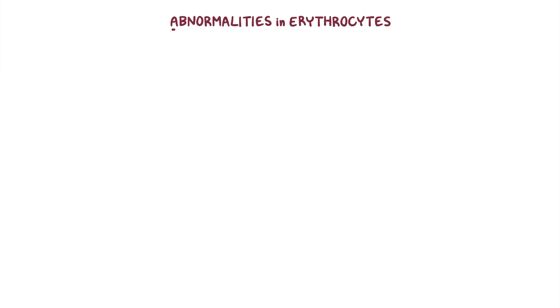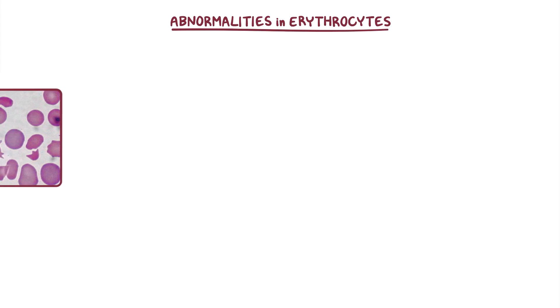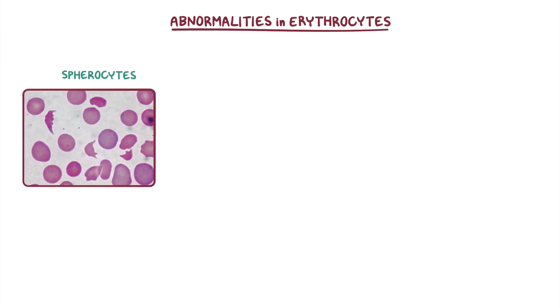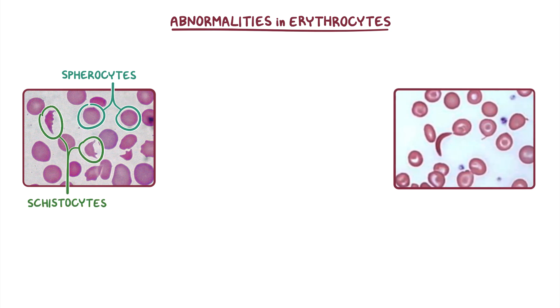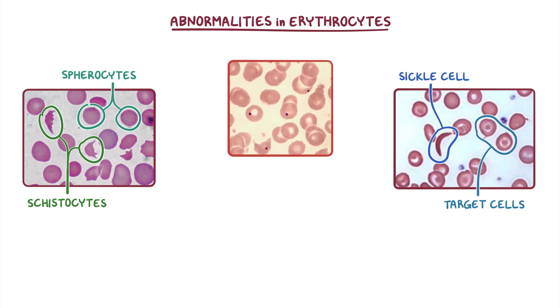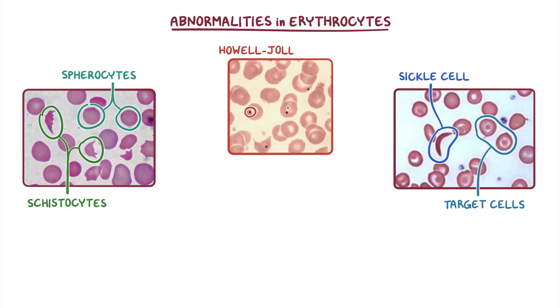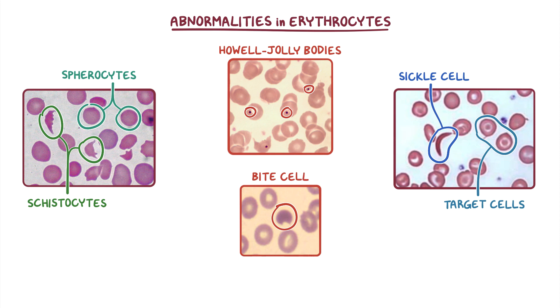Many abnormalities in erythrocytes can be seen with a blood smear, including spherocytes, which lack a distinct pale center, fragmented RBCs called schistocytes, sickle cells and target cells in patients with sickle cell anemia, and many other abnormalities such as Howell-Jolly bodies and bite cells.